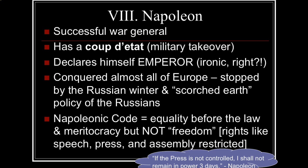One thing Napoleon establishes that lasts is the Napoleonic Code — his system where everyone is equal before the law. He establishes a meritocracy: there is no longer nobility; you earn your position through what you've accomplished. However, he still limits many freedoms. He does not like freedom of the press or freedom of speech, and freedom of assembly is restricted because these are seen as threats to his power. He does clear up France's mixed legal codes into a uniform set of laws and eliminates many injustices, but it promotes order and authority over individual rights. As he said: 'If the press is not controlled, I shall not remain in power three days.'